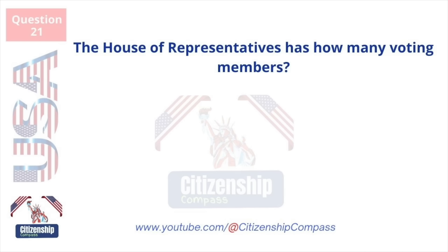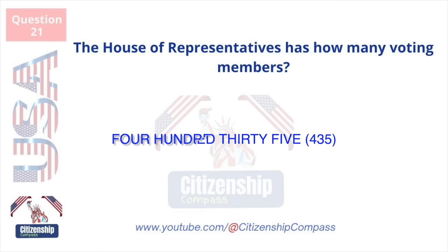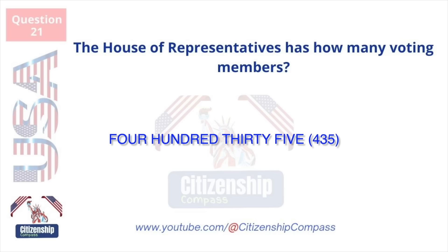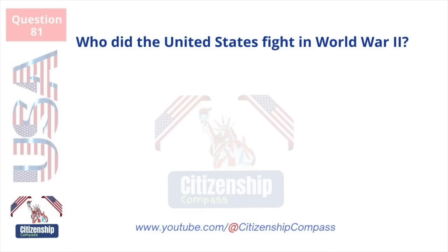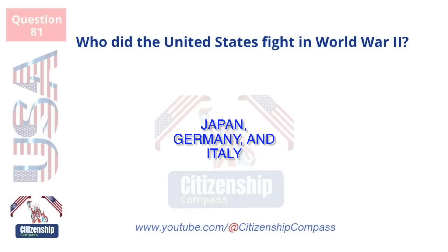The House of Representatives has how many voting members? 435. Who did the United States fight in World War II? Japan, Germany, and Italy.